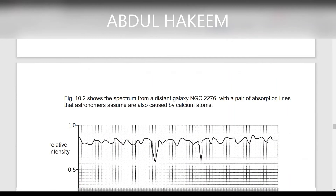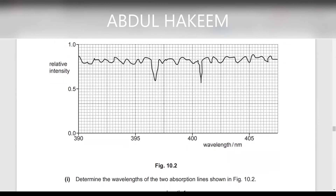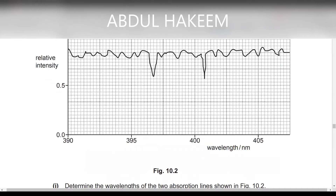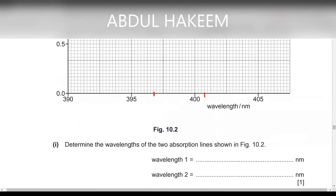The next question: the figure shows the spectrum from the distant galaxy NGC 276, with a pair of absorption lines that astronomers assume are also caused by the calcium atom. We need to determine the wavelength of the two absorption lines shown in the figure. We will look at these two values — this is the change in wavelength.